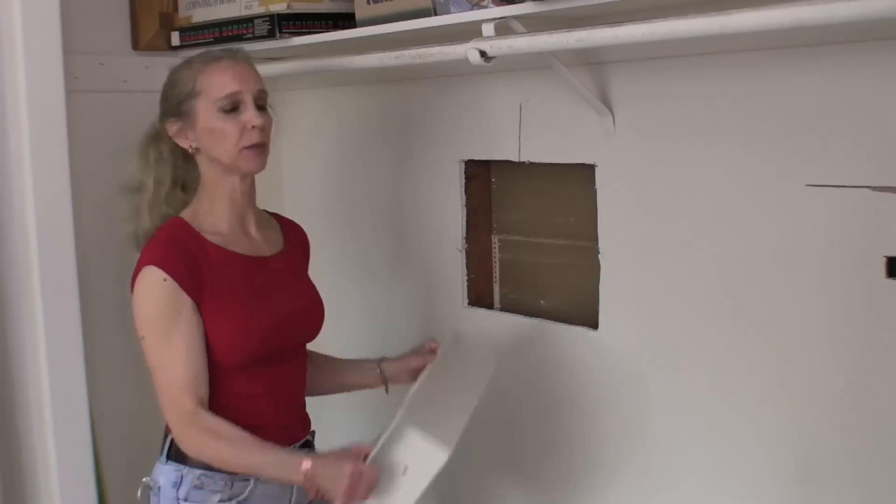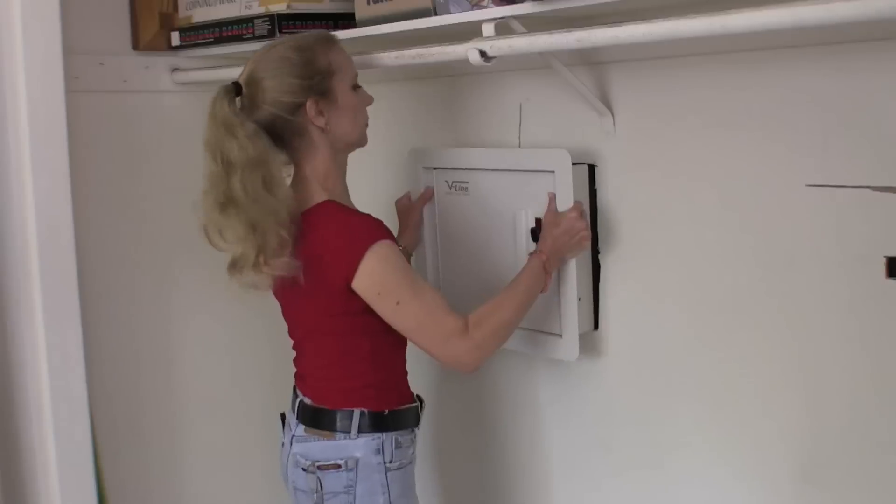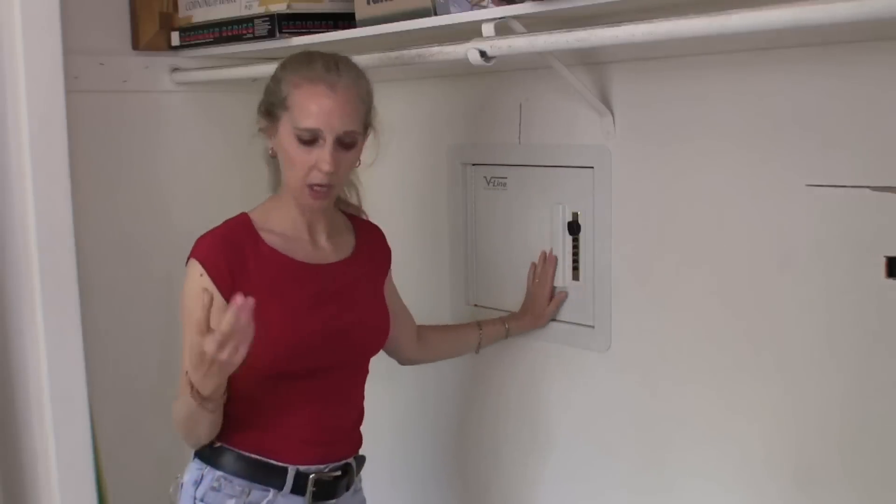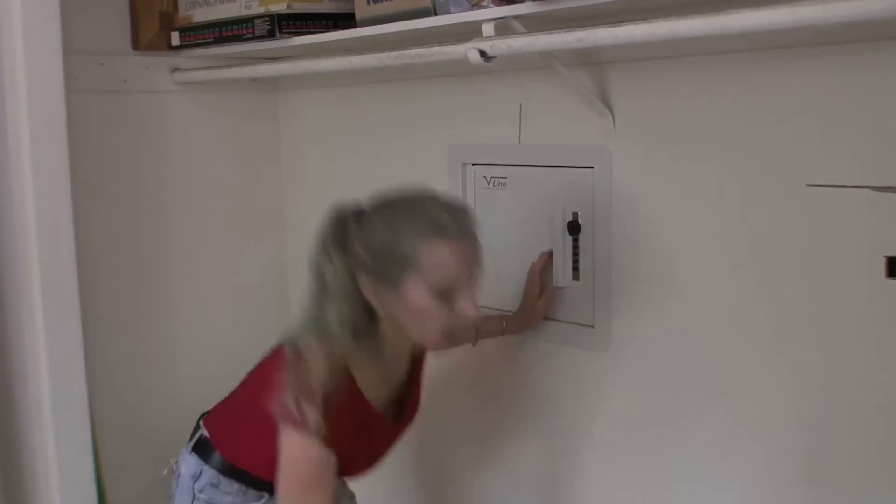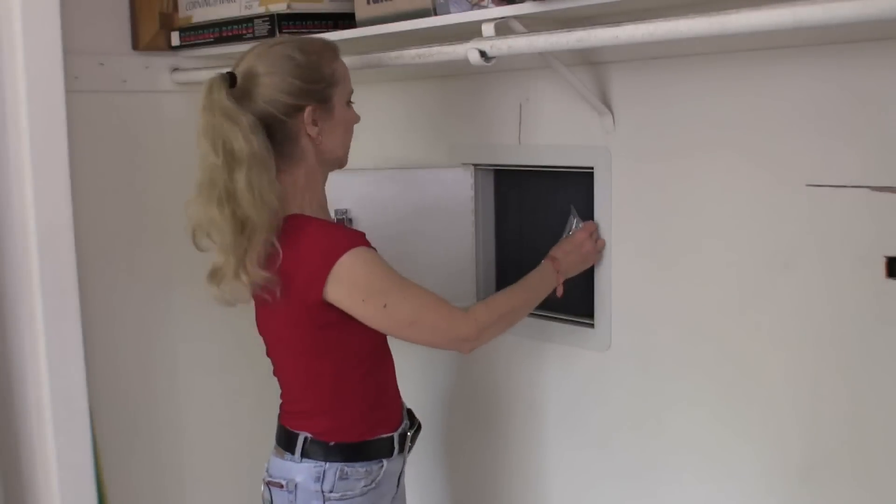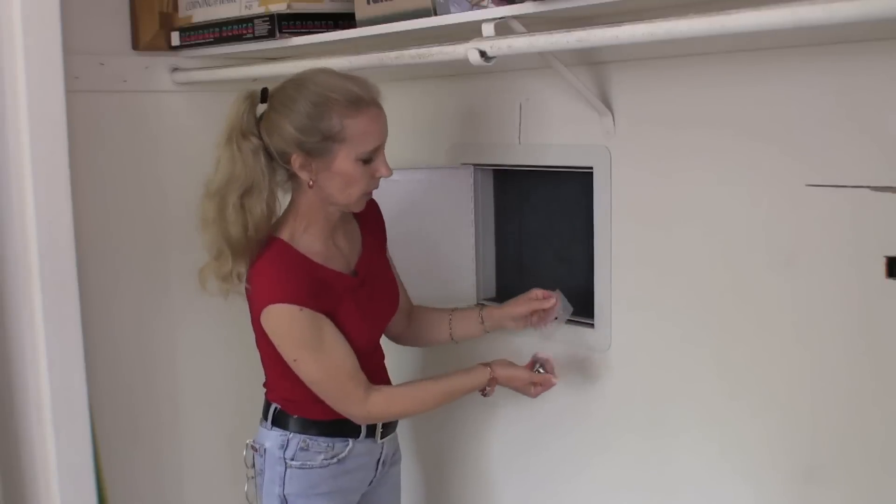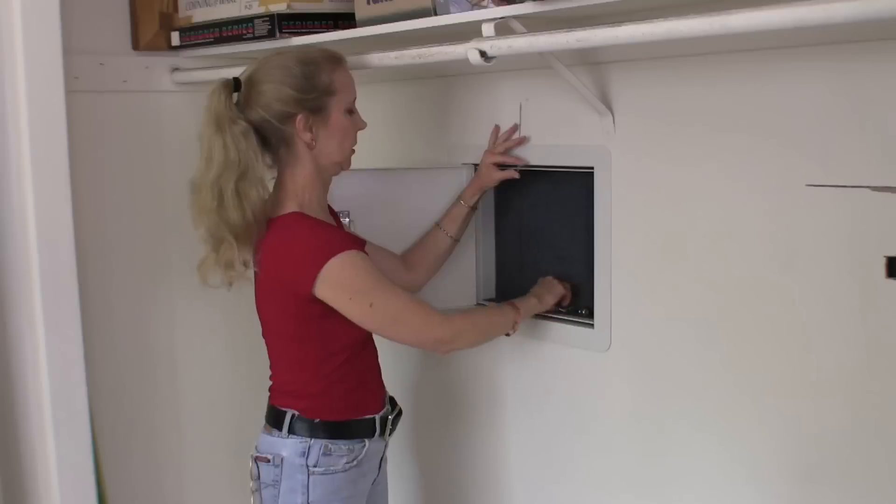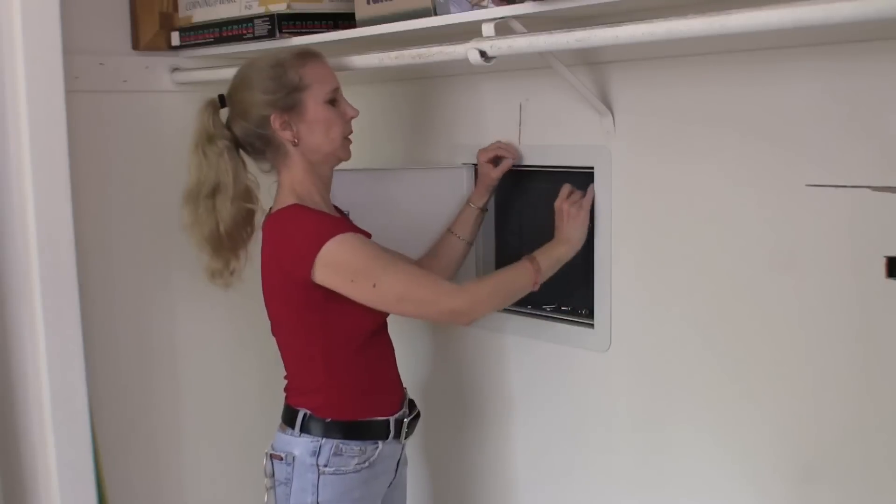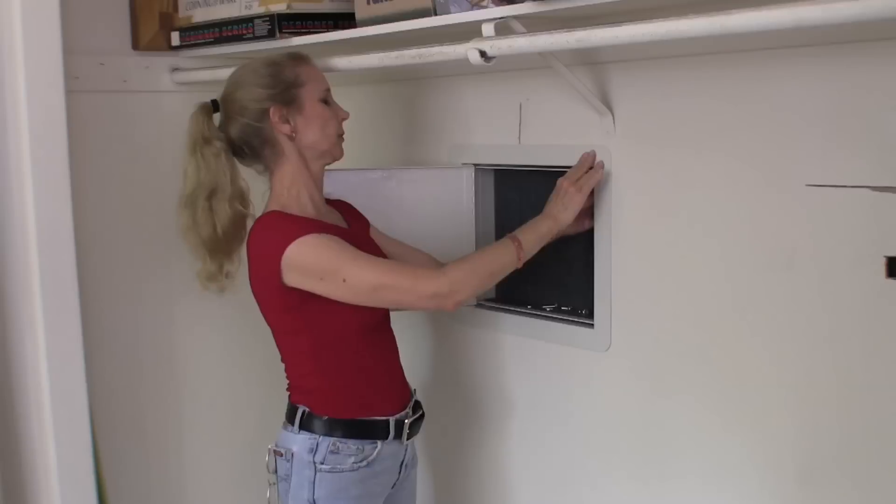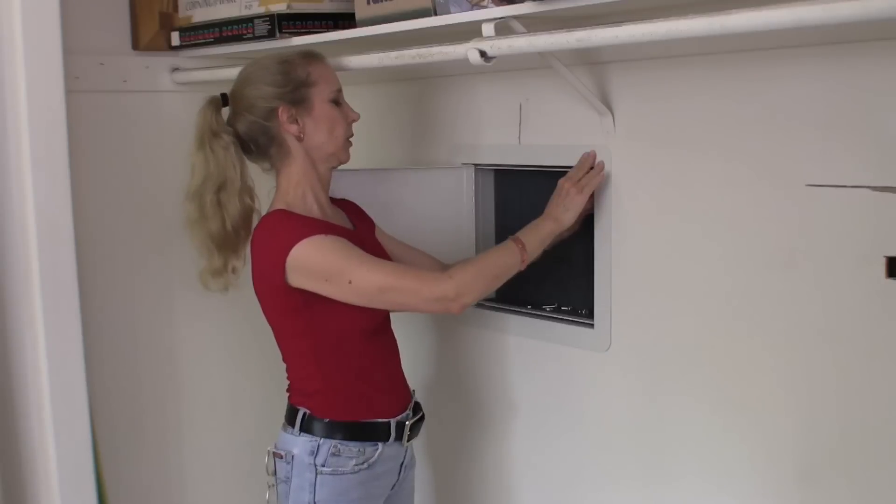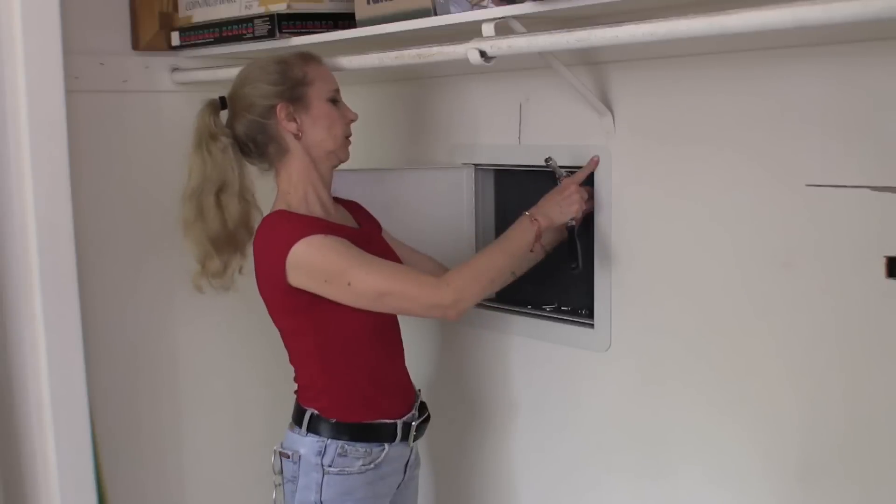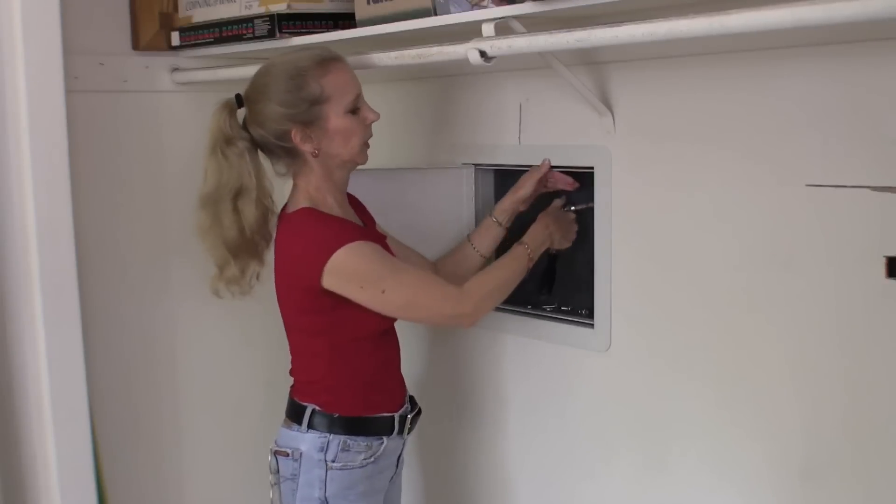So we have our holes all started. We're going to put our safe back in the wall. And we've got included fastening lag bolts. So we're going to take these guys out and washers. And we just put those right in those holes we started, right through the safe. And our ratchet. And we're ready to go.